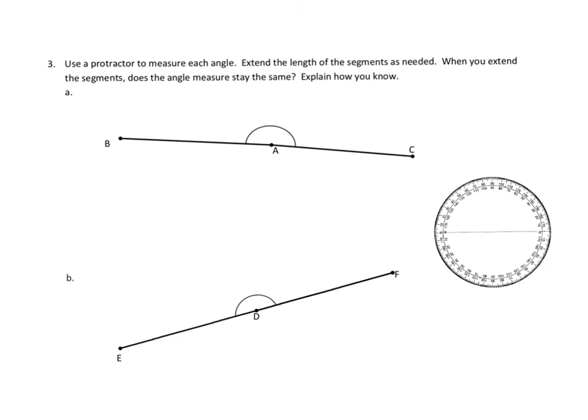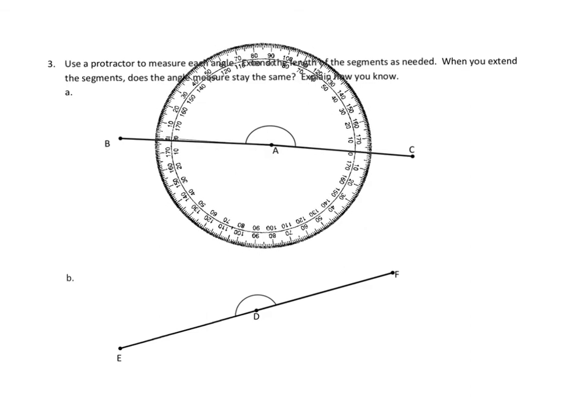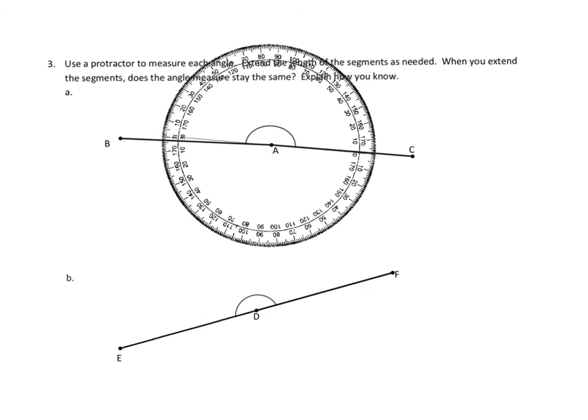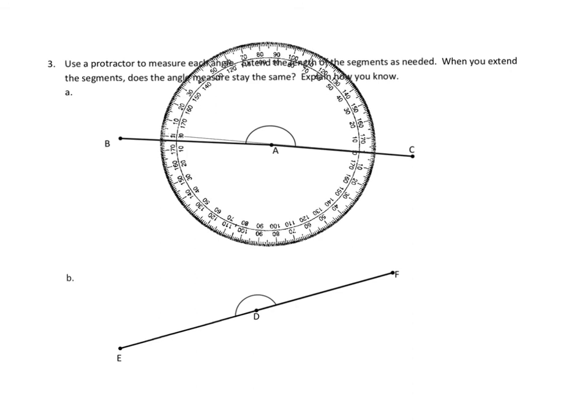Let's take a look at number three, and we'll just do one of these two problems. Number three reads, Use a protractor to measure each angle. Extend the length of the segments as needed. When you extend these segments, does the angle measure stay the same? Explain how you know. So you can see again over here, I've brought in my trusty protractor, and I'm going to expand that out. That's one of the only advantages I have here. And I'm going to expand that out and lay that right on the line.